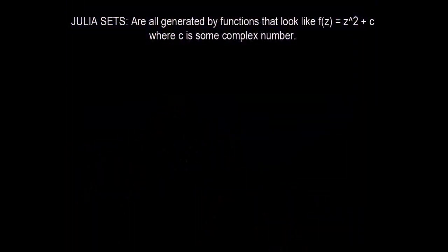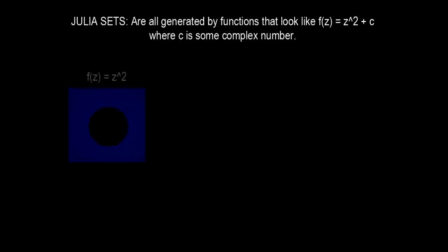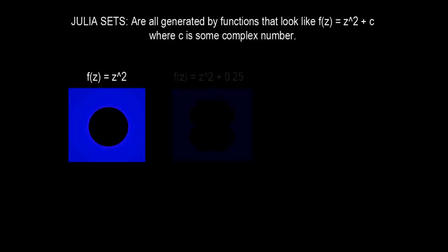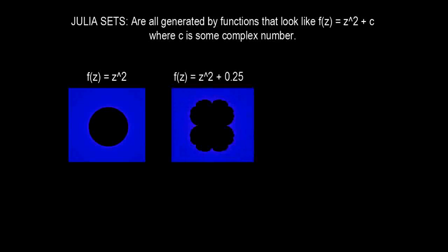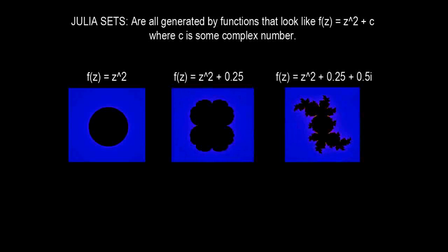So every single image that I showed you just now are images of different Julia sets. All Julia set images are created from functions that look exactly like this. You have the squaring function, but then you also add some constant complex number. In our first example, which was just the squaring function f of z equals z squared, we weren't adding anything, but you can also see it as just adding the number zero. Then the second example, we were adding the complex number 0.25 comma zero. In the next example, we were adding the complex number 0.25, 0.5. So really, all that changes is just this constant that we are adding on top of the squaring. And as you change this constant, the images you get as a result vary wildly.